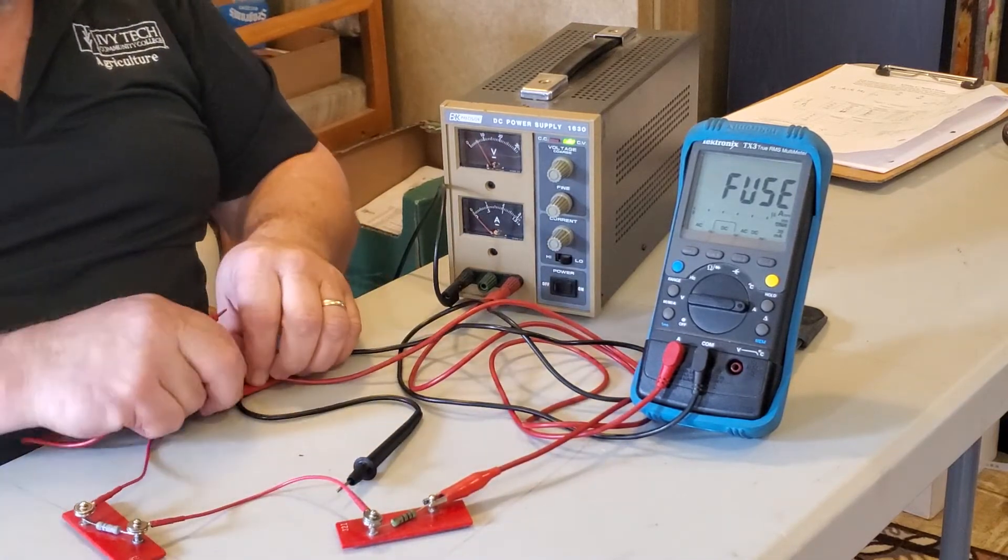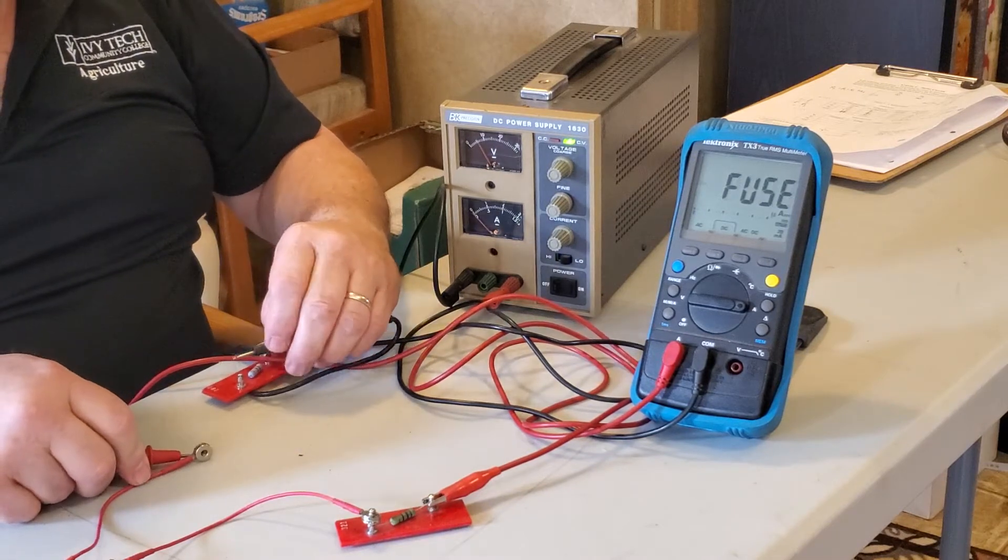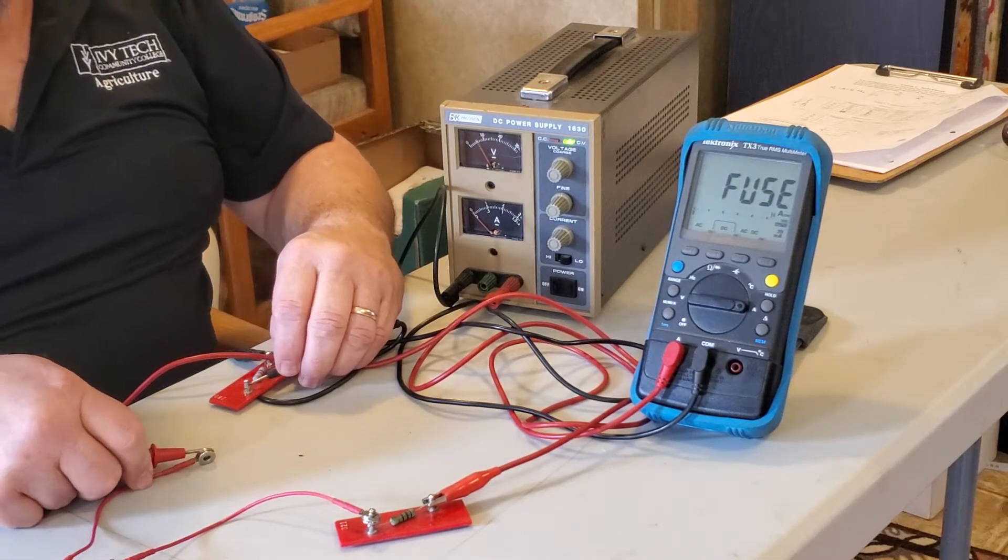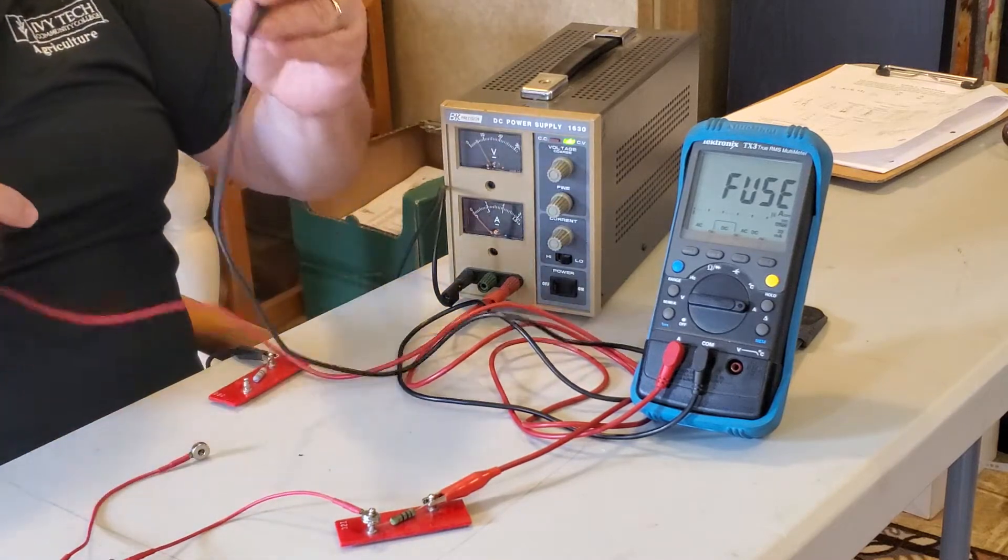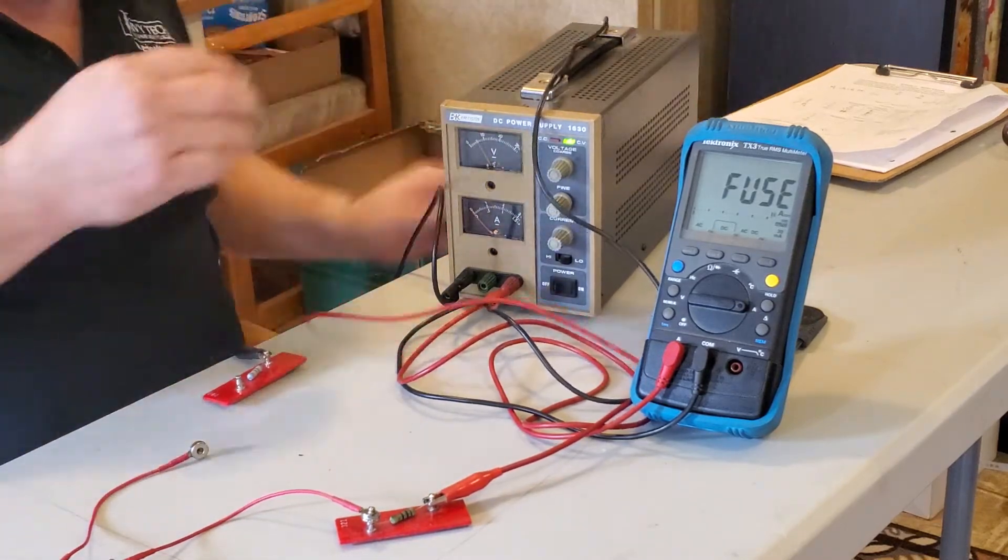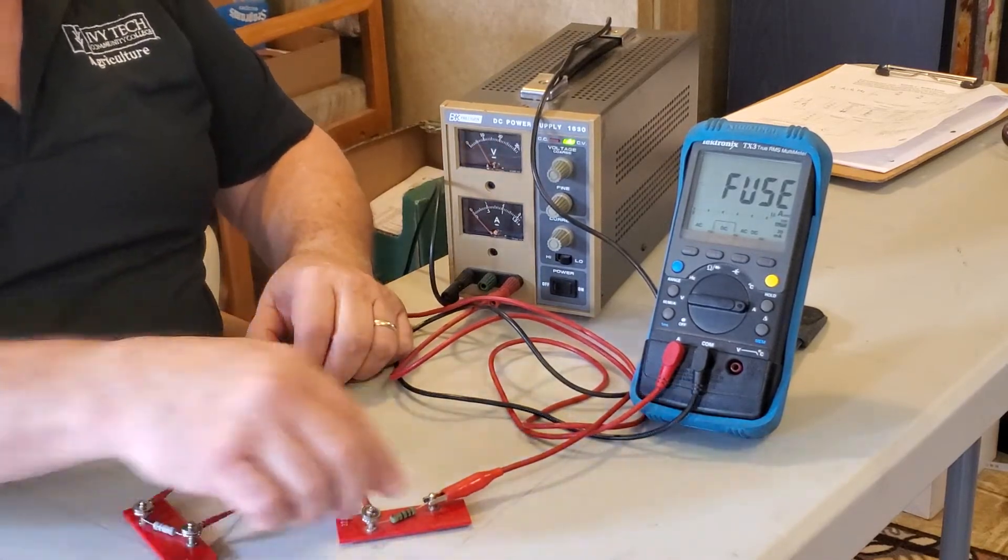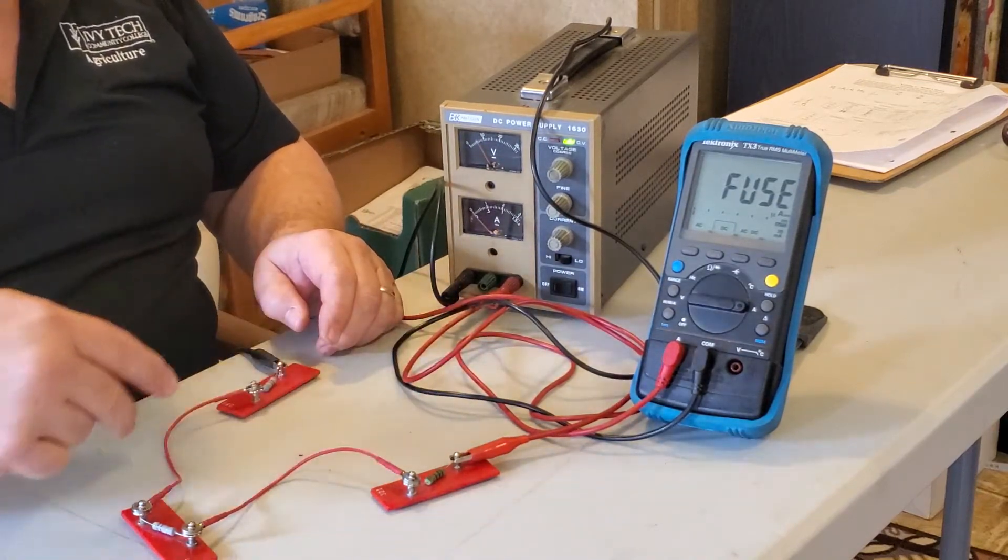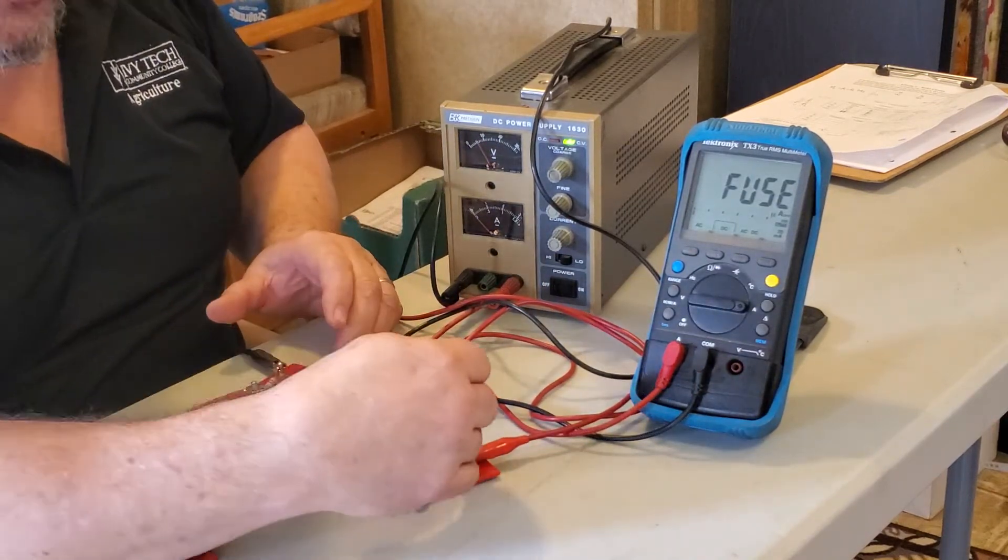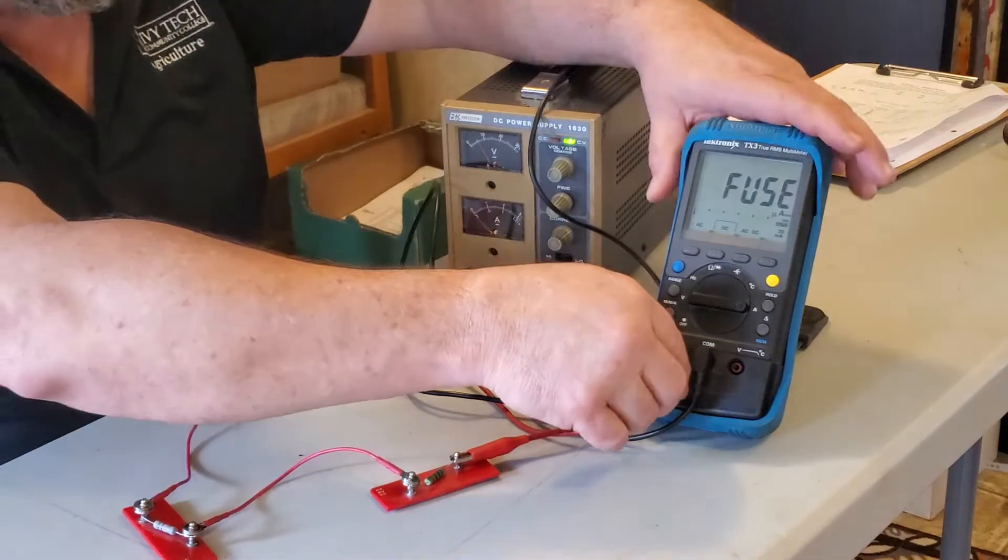So regardless of where you take your leads apart, we would have you take a reading. And all of those with the 10, the 25, and the 25, which should be somewhere close to a 0.2, which would probably be somewhere around a 1.9-ish, because you're going to lose a little bit to the wires.